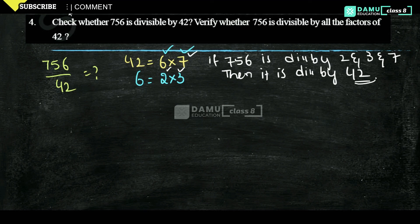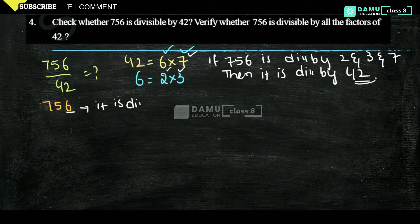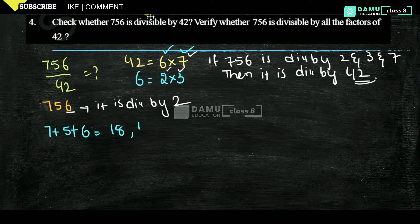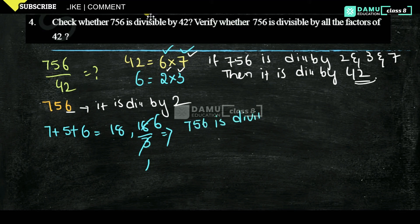Let's take 756. What is the unit digit? 6. Then it is divisible by 2. For our next divisibility rule, 7 plus 5 plus 6: 5 plus 6 will be 11, and 11 plus 7 will be 18. Then 18 divided by 3 — 3 sixes are 18 — so 756 is divisible by 3.